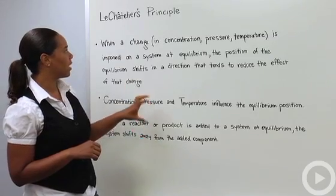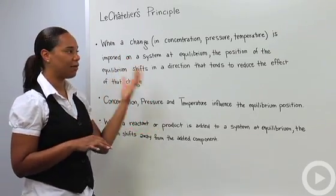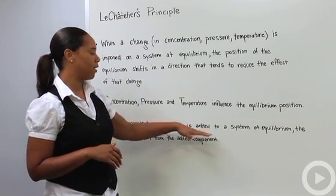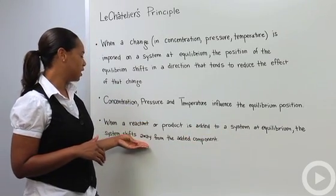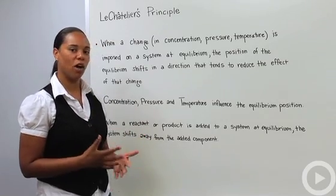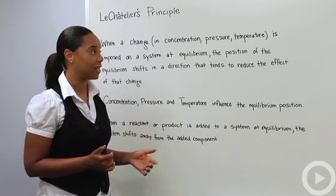So another way to state this is that if you think of a reaction, reactants and products, when the reactant or the product is added to the system that's already at equilibrium, then the system shifts away from that added component. Because the system's tendency is to want to remain at equilibrium, so it will do whatever it has to do in order to maintain that state.